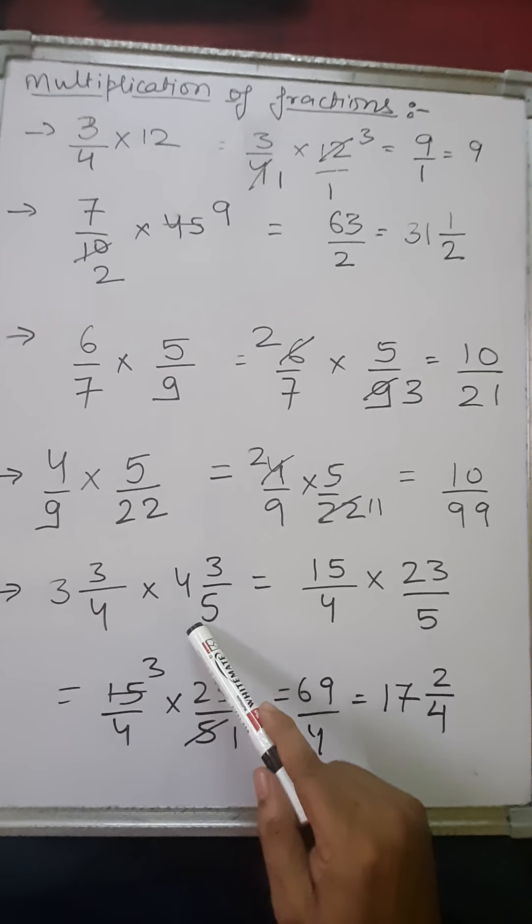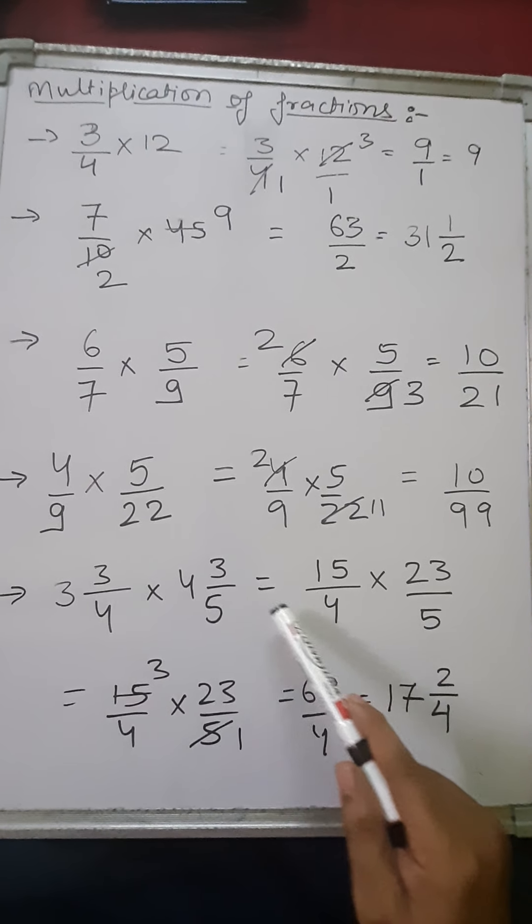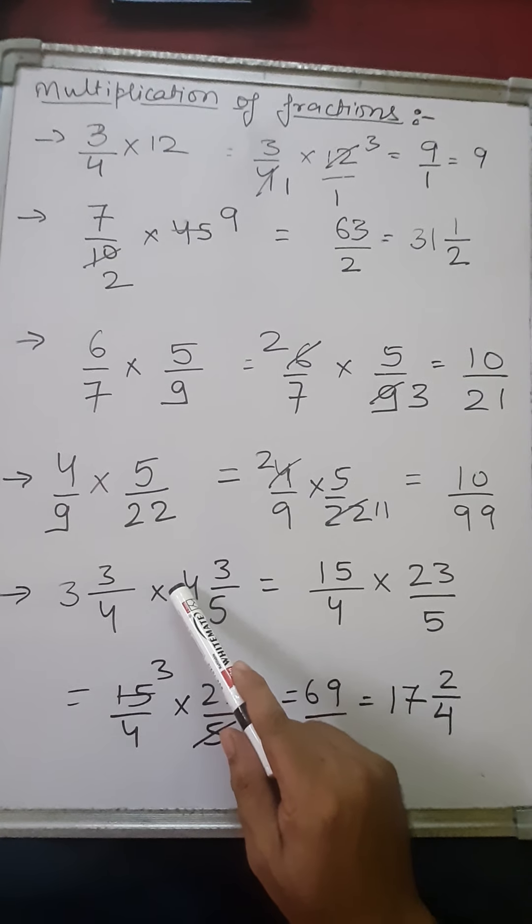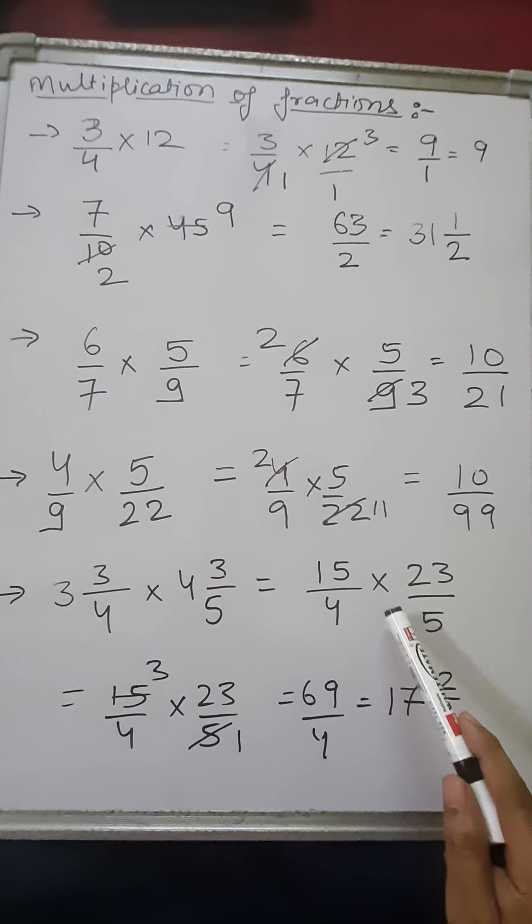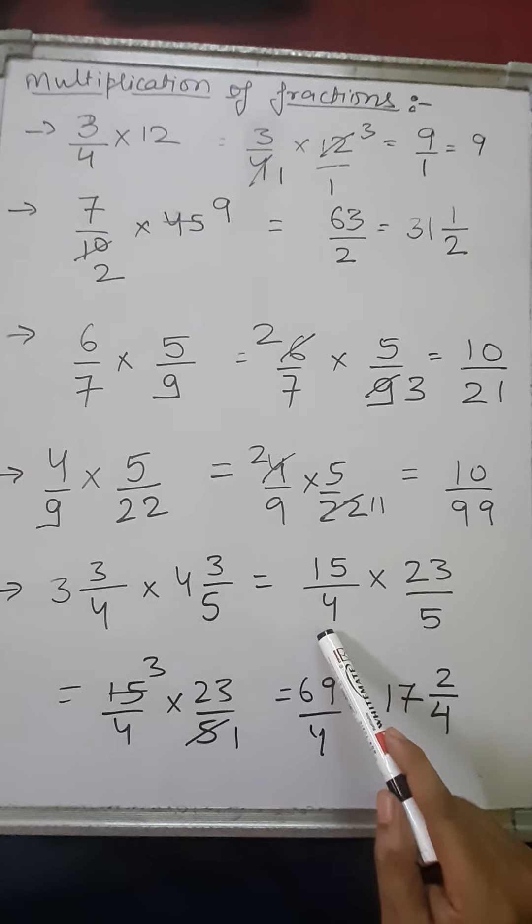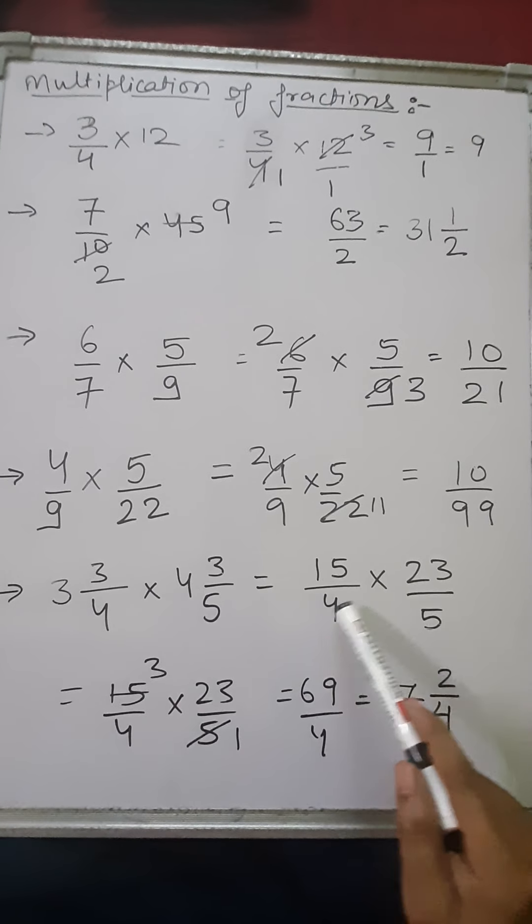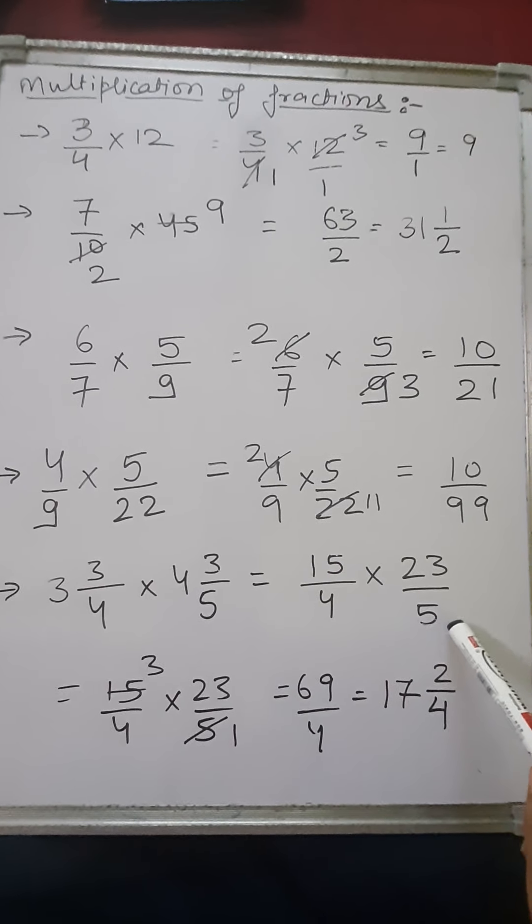So what we'll do, we'll first convert this mixed fraction into improper. 4 threes are 12 plus 3 is 15, 15 upon 4. 5 fours are 20 plus 3 is 23, 23 upon 5. Now when they are converted into improper fraction, now we will simplify.